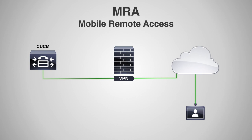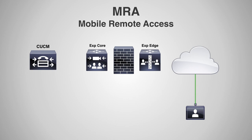These are basically the same thing as the VCS — the main difference being the licenses. These servers are then able to do Mobile Remote Access, MRA, so that you don't have to use VPNs anymore. The idea is to create a VPN-less connection for this endpoint to be able to register into the network, to the CCM.